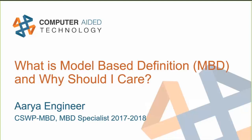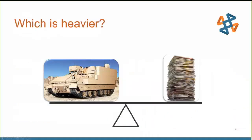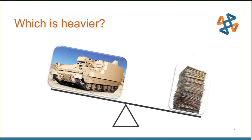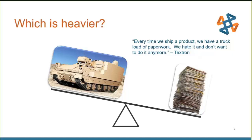Before we get started talking about MBD and SOLIDWORKS, let's look at an example of why MBD exists at all. On the left we have a BAE Systems armored multipurpose ground combat vehicle — the new tank platform for the U.S. Army. On the right, we have all the paperwork used to define this vehicle: part drawings, assembly drawings, specs, bill of materials, ECOs, QA reports, maintenance guides, and so forth. Now, can you guess which one is heavier? It actually ends up being the paperwork. The paperwork used to define the tank is 42 tons, while the tank itself is 41 tons. One of our customers at Textron echoed this sentiment: every time we ship a product, we have a truckload of paperwork — we hate it and we don't want to do it anymore.